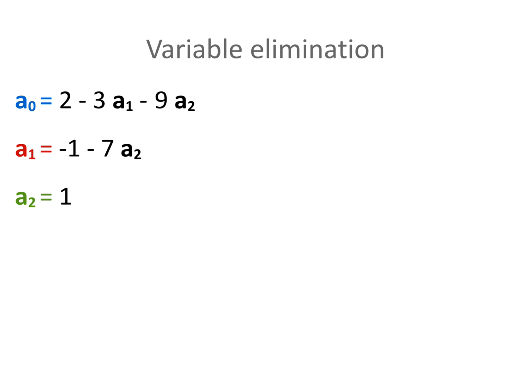We can now work backwards through the other equations to end up with the numerical values for each variable. A1 is minus 1 minus 7, which is minus 8. A0 then becomes 2 plus 24 minus 9, which is 17.